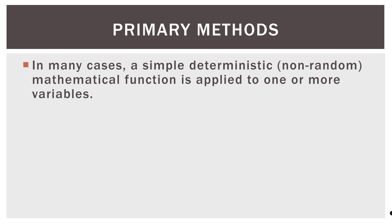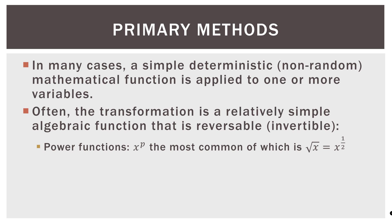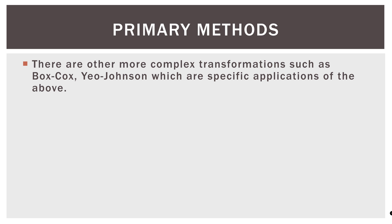So what are the primary methods? In many cases, a simple deterministic — meaning non-random mathematical — function is applied to one or more variables. Often the transformation is a relatively simple algebraic function that is reversible and invertible. The first common type is power functions, the most common being the square root, which is the same as a value raised to the half power. Logarithmic functions are also common, with the two most common being log base 10 and log base E, the natural log. Next is the reciprocal function, which is one divided by that value. More complex transformations such as Box-Cox and Yeo-Johnson are specific applications of these, and I plan to cover both of those in this playlist.